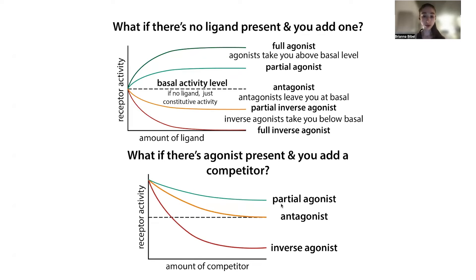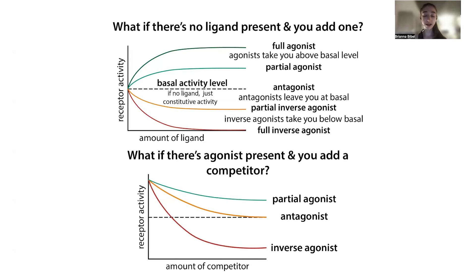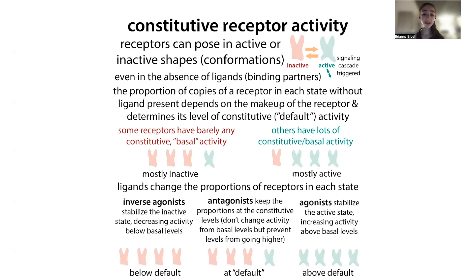What about a partial agonist? A partial agonist can bind but can't fully activate the receptor. Without any ligand present, it will increase activity — just not as much as a full agonist. But if a full agonist is present and you add a partial agonist, they compete for the same site, and since the partial agonist can't activate it as fully, you get a decrease in activity — though you're still above the basal level.